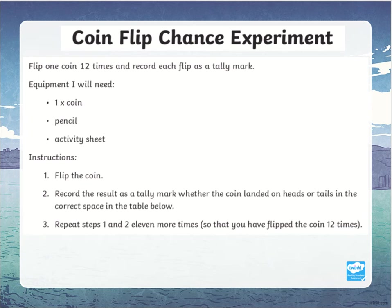The first one is a coin flip chance experiment. You're going to flip a coin 12 times and then record each flip as a tally mark. Here's what you'll need: a coin, a pencil, and an activity sheet. I'll show you what that looks like — you can also do it on a piece of paper.